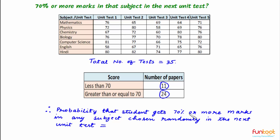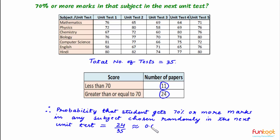The probability that the student gets 70% or more marks in any subject chosen randomly in the next unit test is: the number of papers in which the student gets greater than or equal to 70 marks is 24, divided by the total number of tests written by the student, which is 35. This will approximately come out to 0.69.